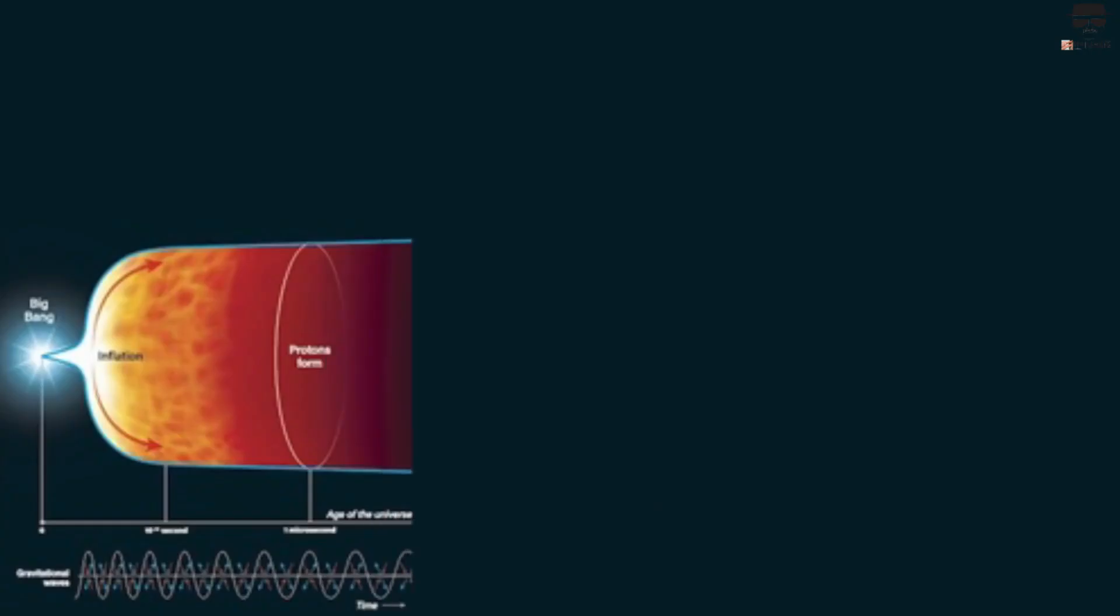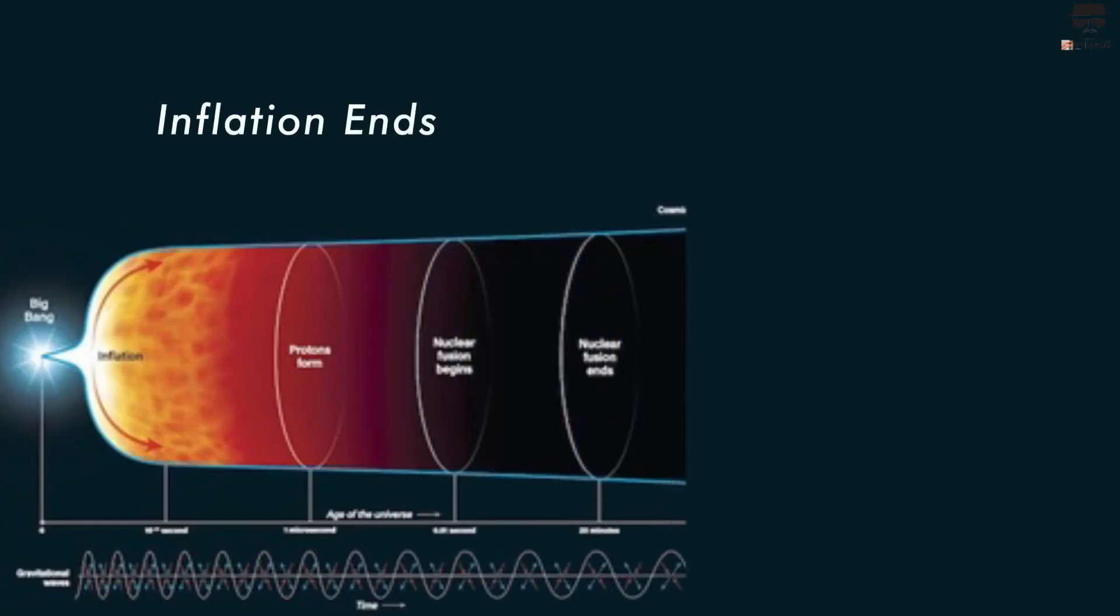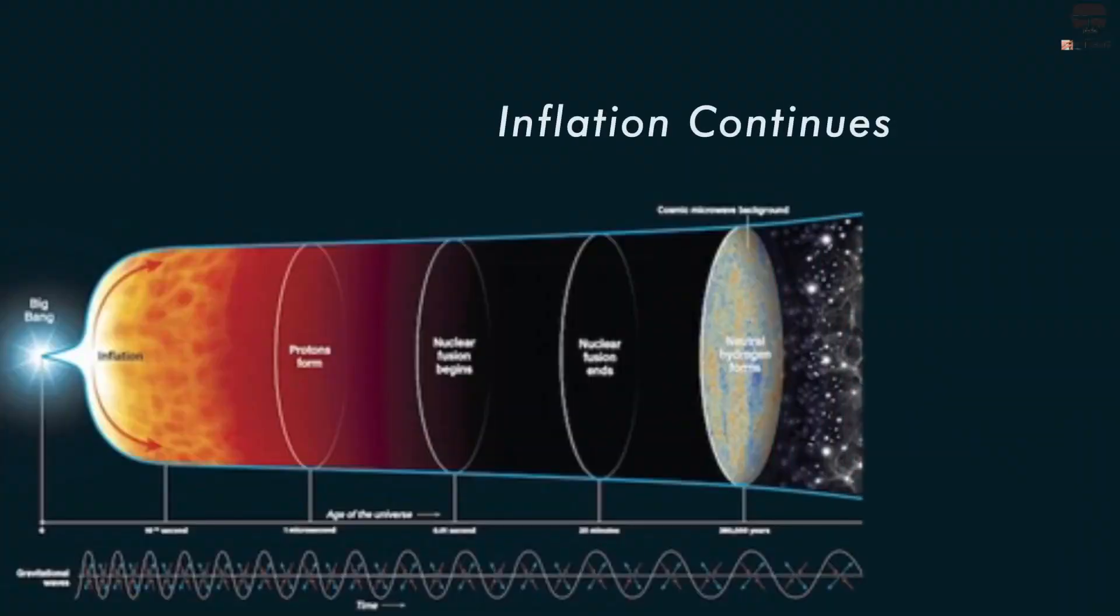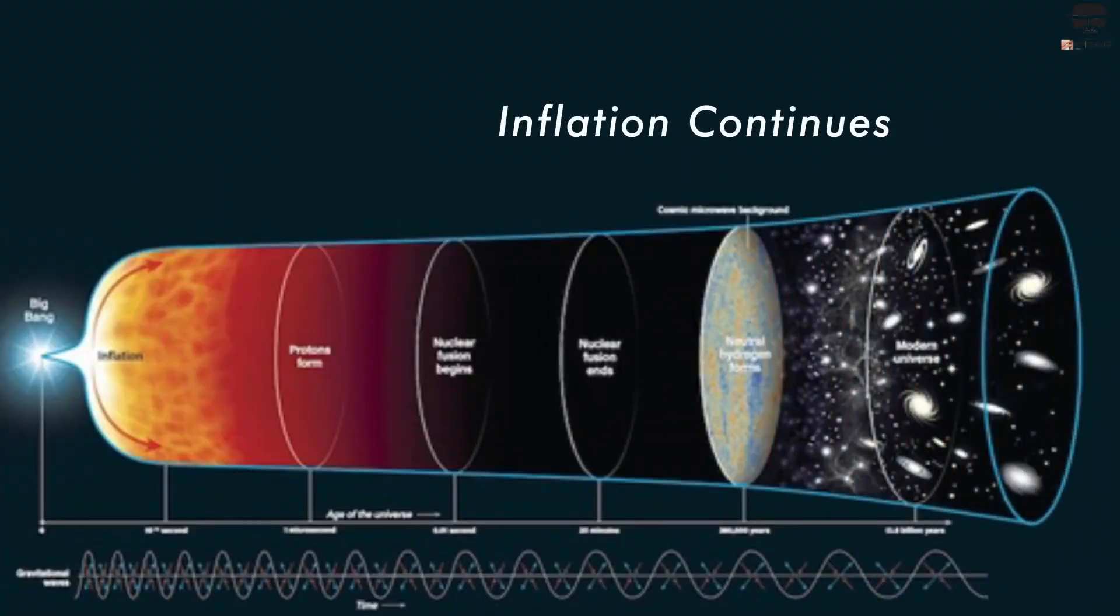Cosmological Inflation. When and where inflation ends, a Big Bang occurs. But inflation doesn't end everywhere at once, and the places where inflation doesn't end continue to inflate, giving rise to more space and more potential Big Bangs.